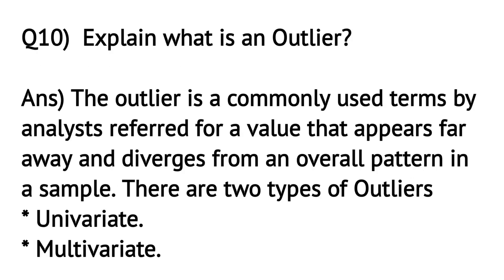Explain what is an outlier. An outlier is a commonly used term by analysts referring to a value that appears far away and diverges from an overall pattern in a sample. There are two types of outliers: univariate and multivariate.